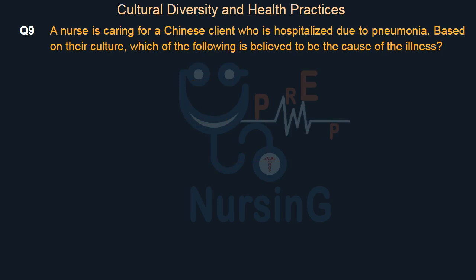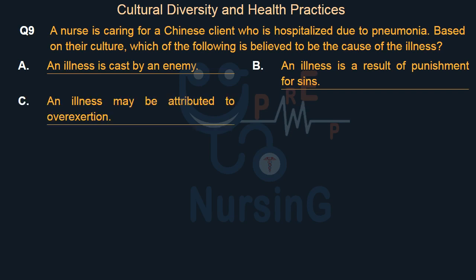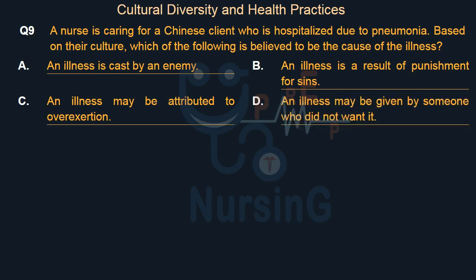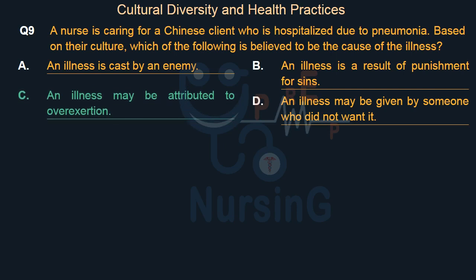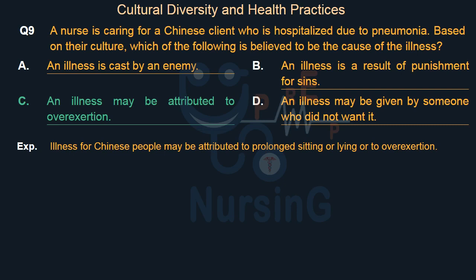A nurse is caring for a Chinese client hospitalized due to pneumonia. Based on their culture, which of the following is believed to be the cause of illness? Option A: An illness is cast by an enemy. Option B: An illness is a result of punishment for sins. Option C: An illness may be attributed to overexertion. Option D: An illness may be given by someone who did not want it. The right answer is Option C. Illness for Chinese people may be attributed to prolonged sitting, lying, or overexertion.